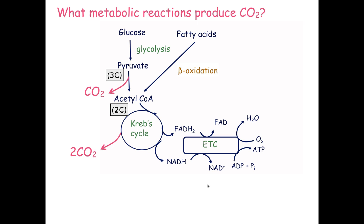You get 2 molecules of carbon dioxide per acetyl-CoA in the Krebs cycle, because your 2-carbon acetyl-CoA reacts with a 4-carbon oxaloacetate, and there's a series of reactions that eventually leads to the loss of those 2 carbons. This is what happens when we start with glucose — glucose goes through glycolysis to form pyruvate, carbon dioxide is formed when pyruvate becomes acetyl-CoA, and further carbon dioxide is formed when acetyl-CoA goes through the Krebs cycle. So there's a lot of carbon dioxide being formed when you use glucose per amount of oxygen used.